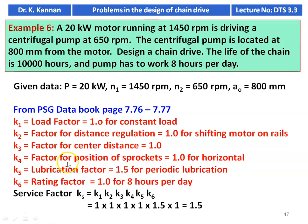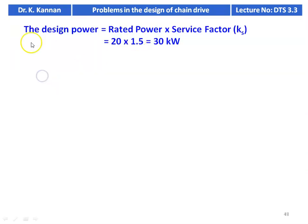Service factors from PSG data book: K1 load factor = 1.0 for constant load — centrifugal pump runs at constant speed. K2 = 1 for shifting motor on rail. K3 = 1.0 for the given center distance. K4 = 1.0 for horizontal drive. K5 lubrication factor = 1.5 for periodic lubrication. K6 rating factor = 1.0 for 8 hours per day. Service factor Ks = K1 × K2 × K3 × K4 × K5 × K6 = 1.5. Design power = rated power × service factor = 20 × 1.5 = 30 kilowatt.